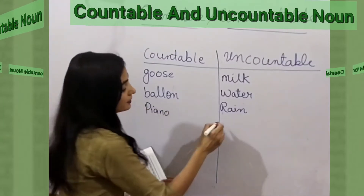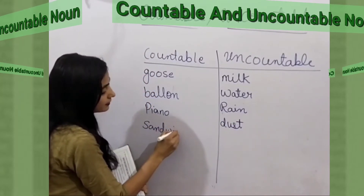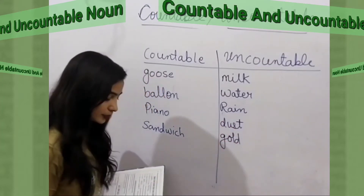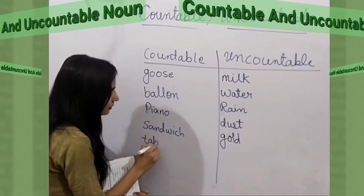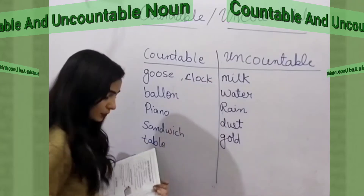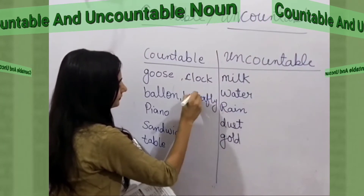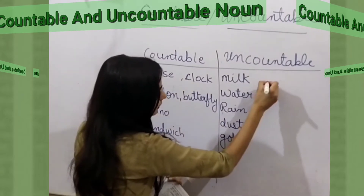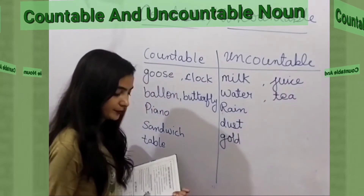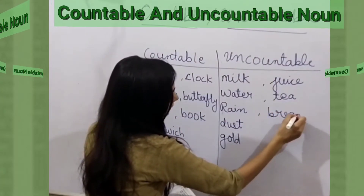Dust is uncountable. Sandwich is countable. Next is gold — it's also uncountable. Table is countable. Clock is also countable. Butterfly is also countable. Juice is uncountable. Tea is also uncountable. Book is countable. And bread is uncountable.